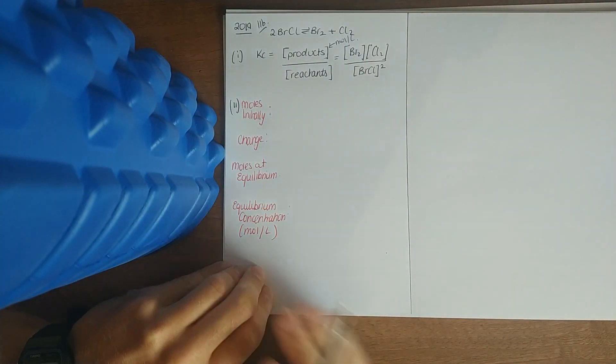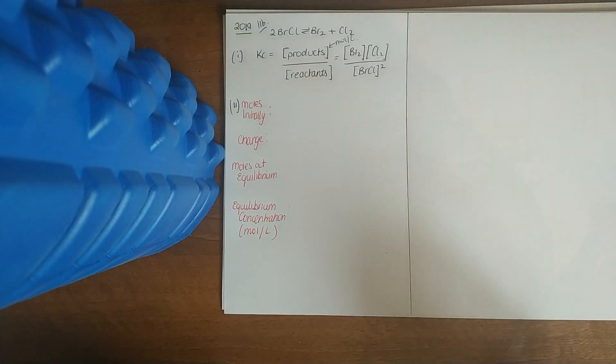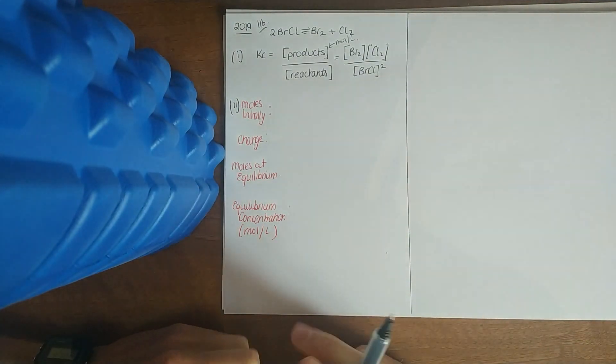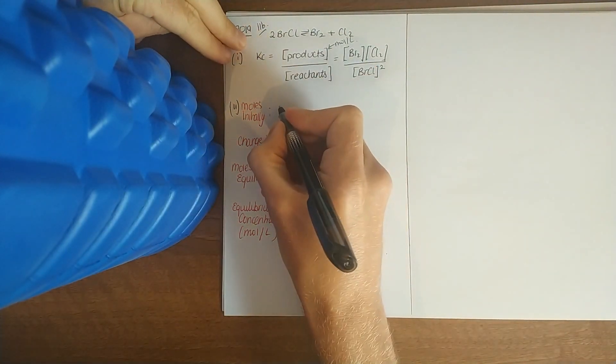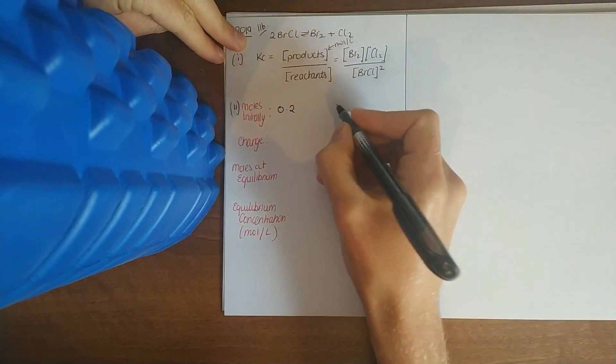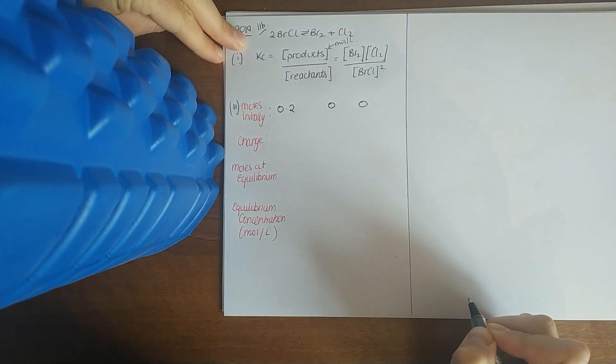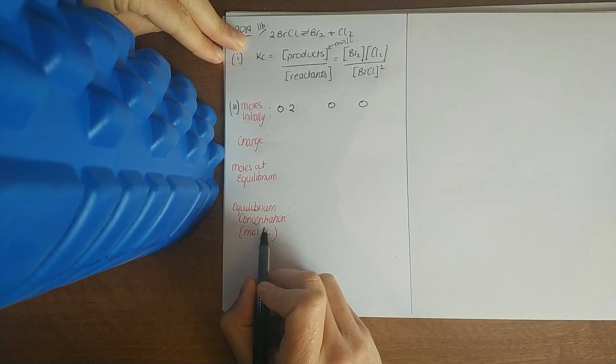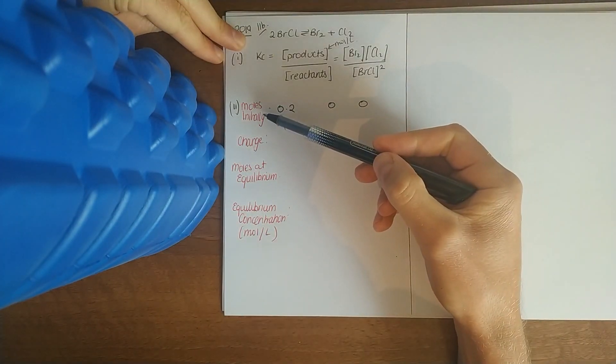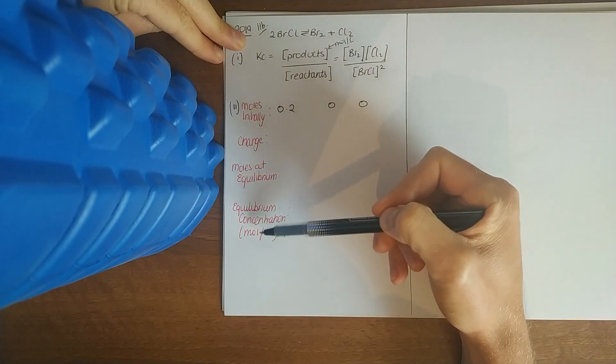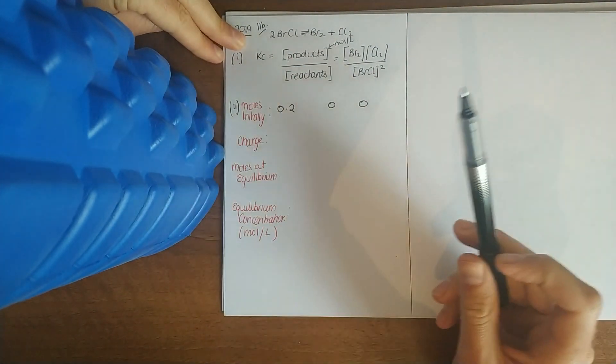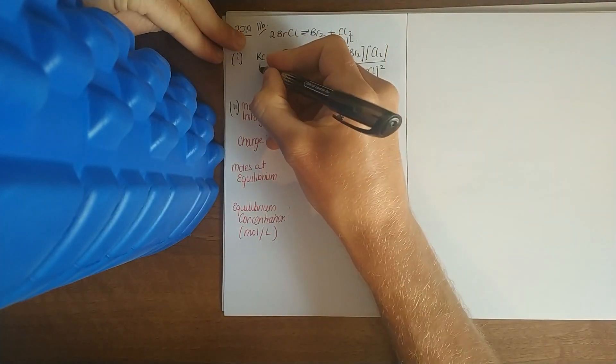We'll get cracking on the calculation. It says calculate the percentage decomposition into bromine and chlorine of 0.2 moles of BrCl. We've got 0.2 moles initially, zero moles of product, placed in a five liter container. I generally use these headings: moles initially, change, moles at equilibrium, equilibrium concentration. Allow to reach equilibrium at 1200 degrees celsius - that's all to do with KC, the only thing that affects it is temperature.